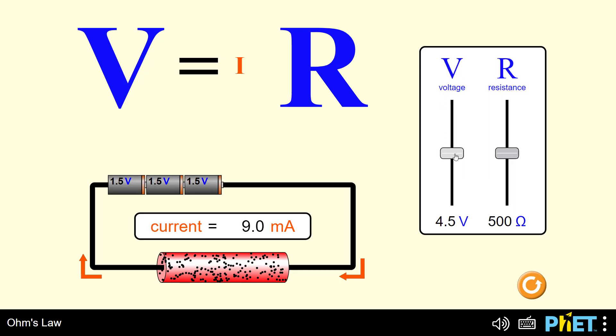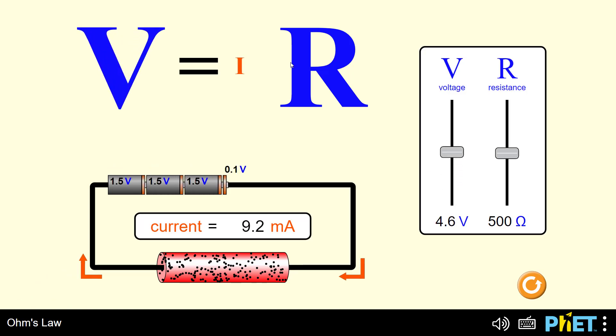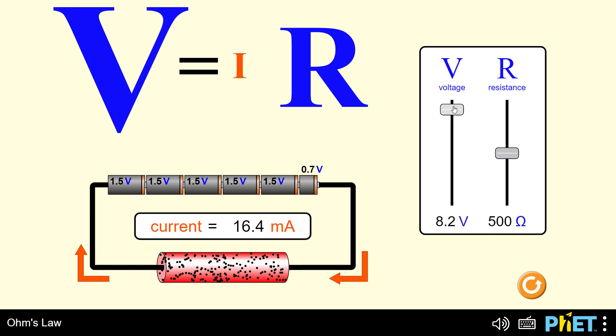If we start decreasing the value of the voltage, we notice that the current also decreases. The opposite is completely true: if the voltage increases, the current begins to increase. It is now 14 milliamps, and as the voltage increases further, the current reaches 16 milliamperes.